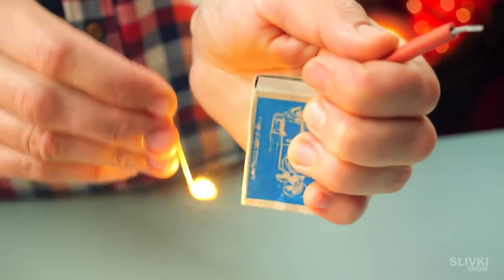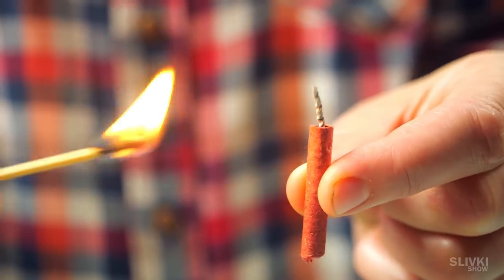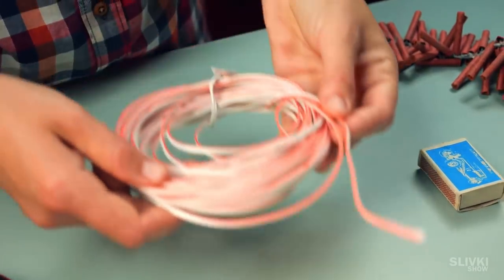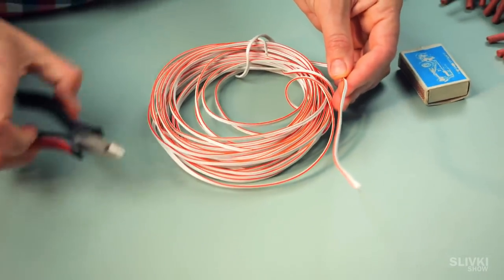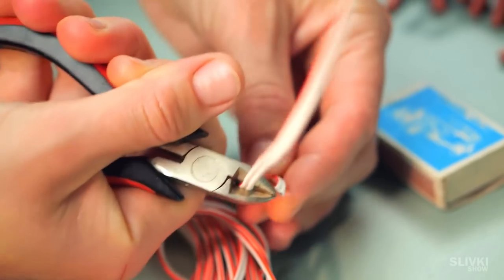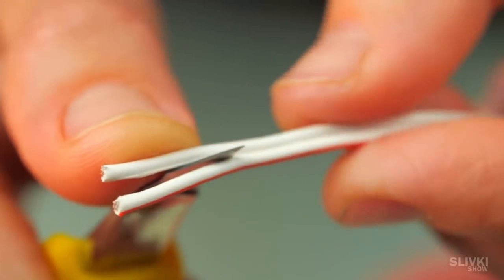Everyone loves firecrackers, but lighting them in your hands can sometimes be scary, so we light the fuse with electricity. To do this, we need a double-stranded wire, which we need to divide into two and strip the ends.